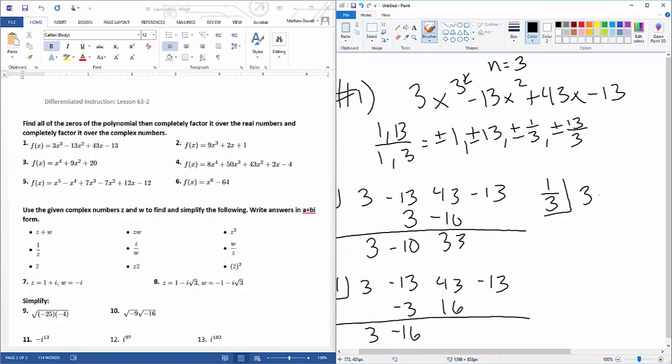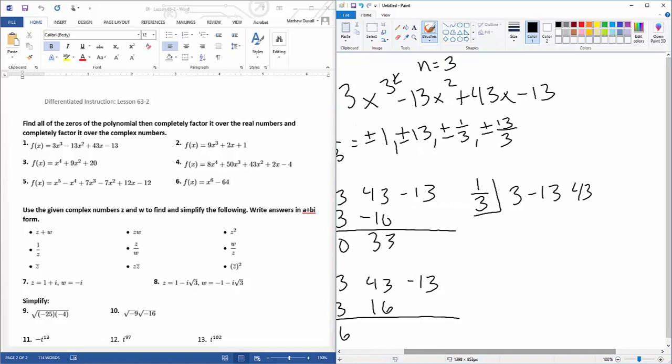Let's try one-third. 3, 3, negative 13, 43, and negative 13. Bring down 3, multiply, add, multiply, add, multiply, add. So that worked! So I know that my zero is going to be x minus 1 third.